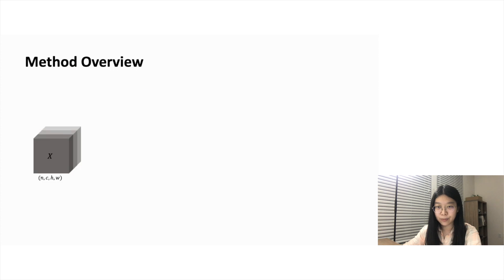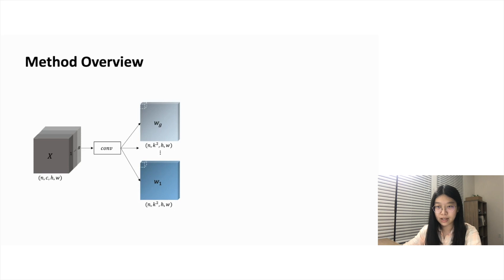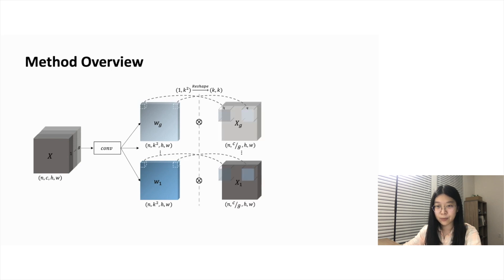Given an input feature map, we first separate C channels into G groups. For each group, we predict a set of low-pass filter weights for every spatial location, where K is the kernel size. Then we apply a softmax layer to constrain the filter weights to sum to 1 for the low-pass property. We then apply the predicted low-pass filters on each spatial location and channel group, so that for each pixel, it is computed as the weighted sum of its surroundings. We finally concatenate all the channel groups back and pass the feature to the next layer.